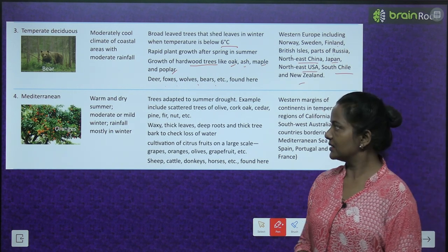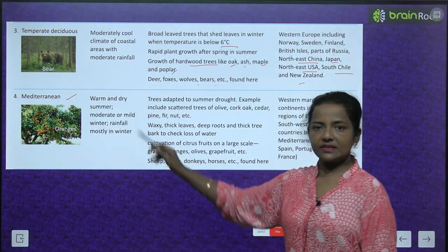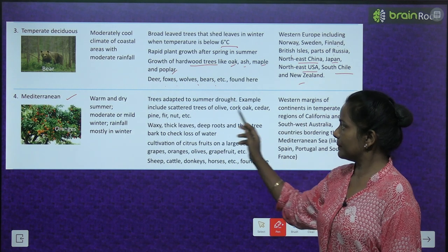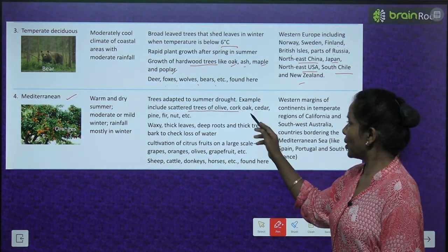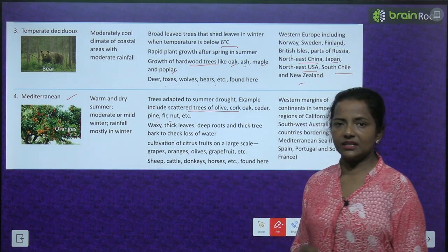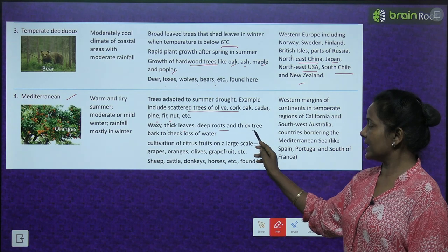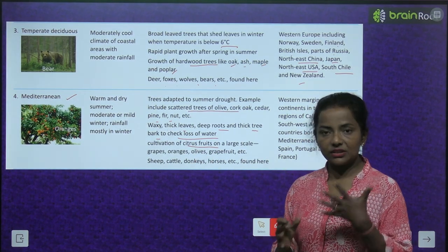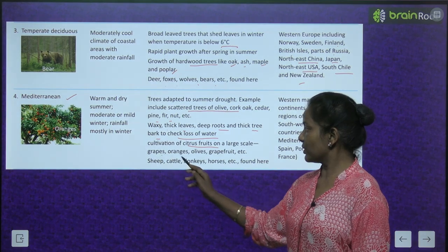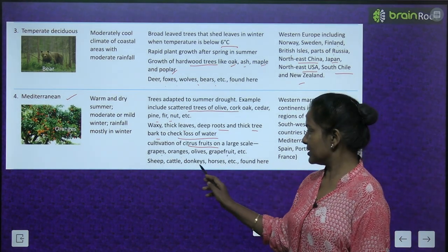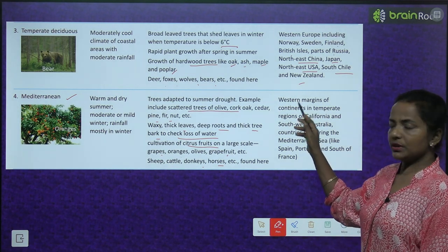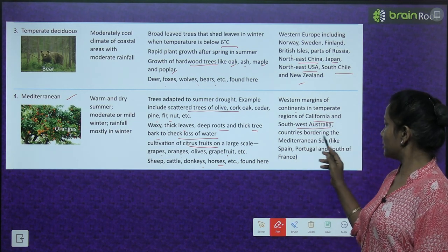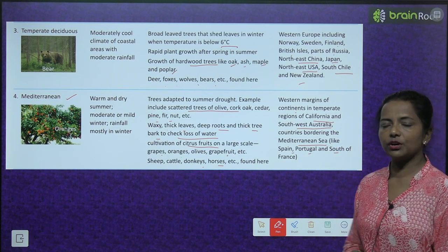Next is the Mediterranean biome. Warm and dry summer, moderate or mild winter, rainfall mostly in winter. Trees are adapted to summer drought — scattered trees of olive, cork oak, cedar, pine, fir, and nut. Waxy thick leaves, deep roots, and thick tree bark to check loss of water. Citrus fruits like grapes, oranges, olives, and grapefruit are cultivated here. Sheep, cattle, donkeys, and horses are found here. Regions: western margins of continents in temperate zones — California, southwest Australia, and countries bordering the Mediterranean Sea like Spain, Portugal, and south of France.